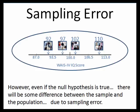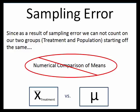Even if the null hypothesis is true and the vitamin water is nothing but water from the tap, there's going to be some difference between our treatment group and our population due to nothing other than sampling error. How do we distinguish whether the difference at the end of our study is a result of our manipulation — giving people vitamin water — versus being due to sampling error? That is what hypothesis testing is all about. Through sampling error, we cannot just numerically compare the treatment group to the population, because that difference could be due to sampling error rather than the effect of a treatment.